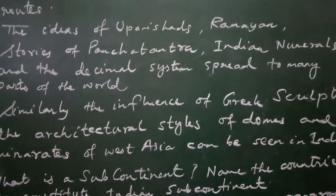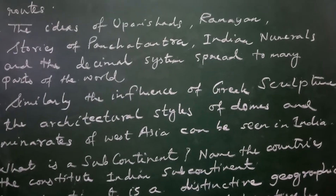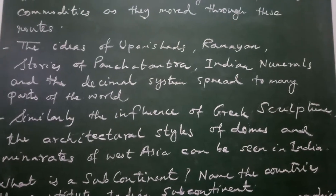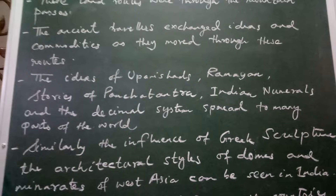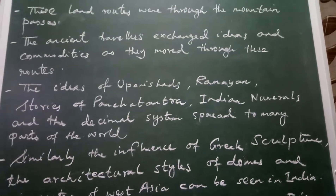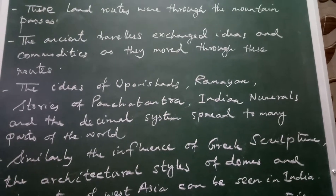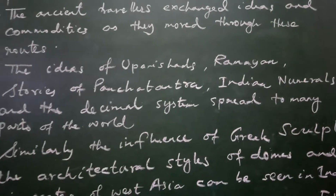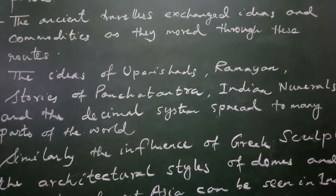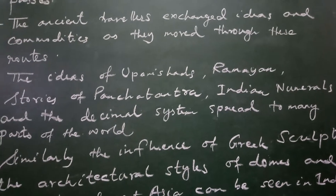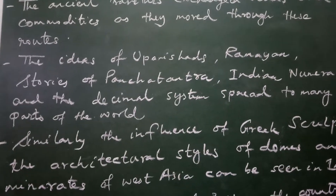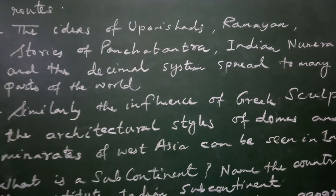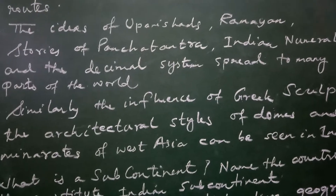Similarly, the influence of Greek culture and the architectural styles of domes and minarets of West Asia can also be seen in India. Indian contacts with the outside world through mountain passes helped in two ways: ideas and commodities were exchanged — the Panchatantra, Upanishads, Ramayana, and decimal system spread from India, while Greek culture and West Asian architectural styles came into India.